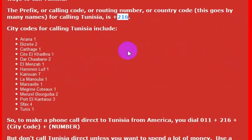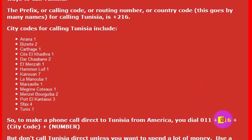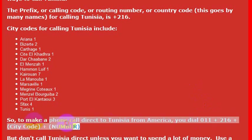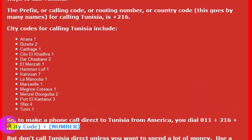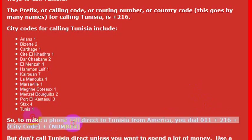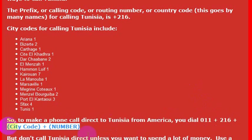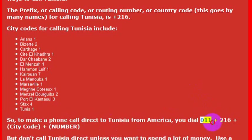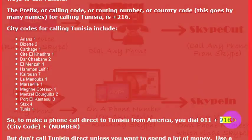So if you wanted to call Tunisia directly from the United States, you would dial the international dialing code which is 011, and then you would dial the country code which is 226, and then the city code and the number — the phone number that you wanted to reach usually includes the city code. Again if you want to dial directly there you would dial 011 then 226.